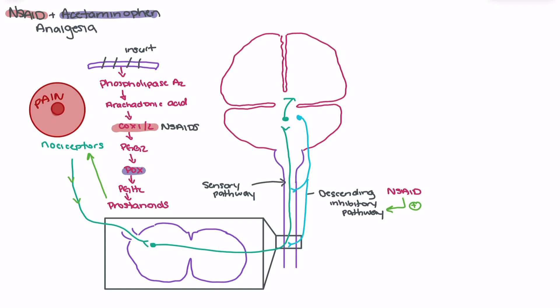So if we're activating the descending inhibitory pathway, we're reducing the ability of the somatosensory system to promote that pain to the cortical and subcortical regions of the brain.